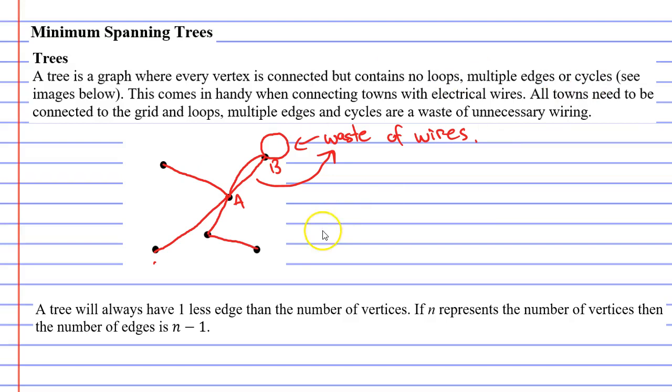It also says we don't want cycles. Let's label some more vertices. Let's label this town D and town C. A cycle would be where we connect town D to town C, the cycle being that we have a cycle between C, A and D. Once again this is a waste of wires since towns D and C only really needed to be connected to town A.